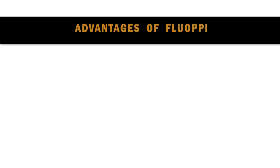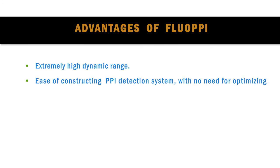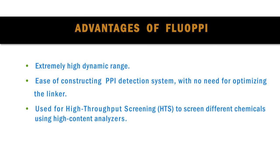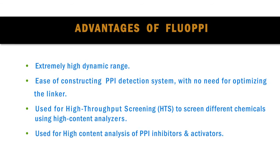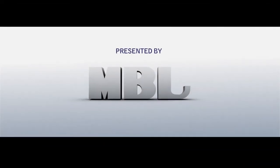Advantages of FLOPI include an extremely high dynamic range and ease of constructing a PPI detection system with no need for optimizing the linker. It is useful for high-throughput screening using high-content analyzers, and for high-content analysis of PPI inhibitors and activators. Contact MBL today to learn more about FLOPI technology.